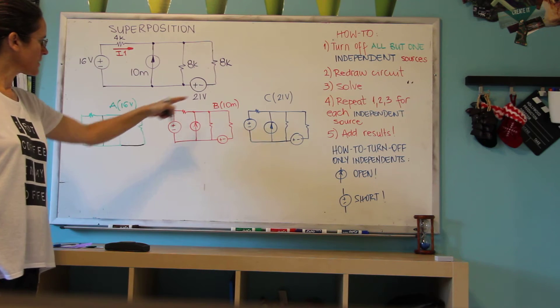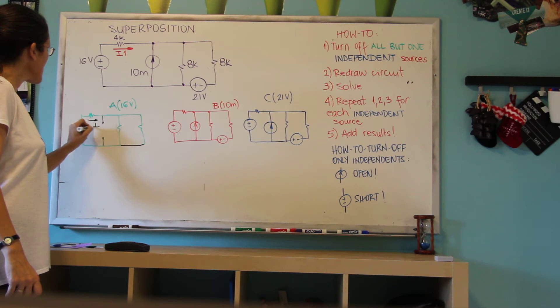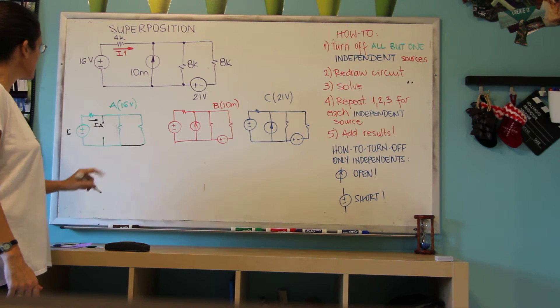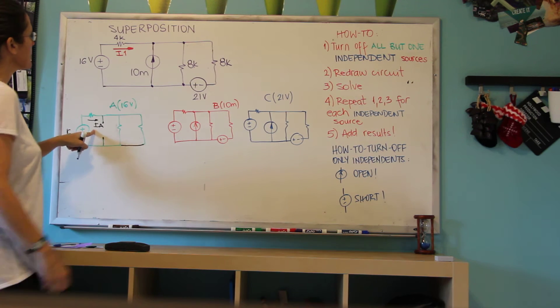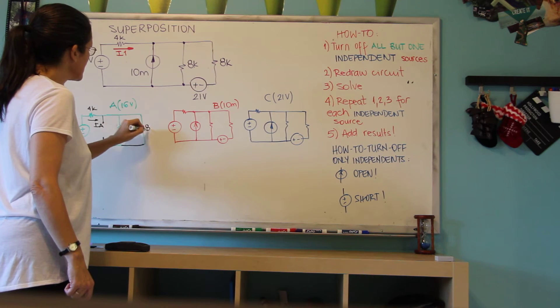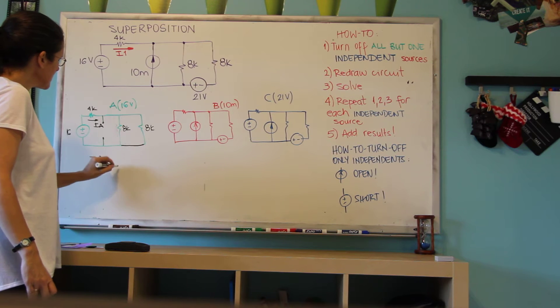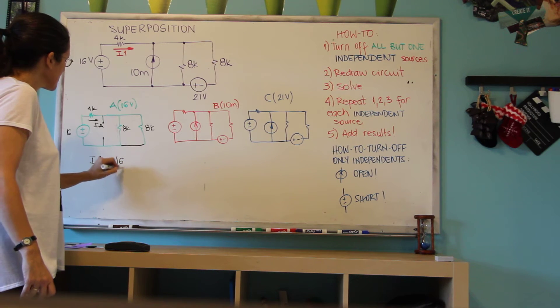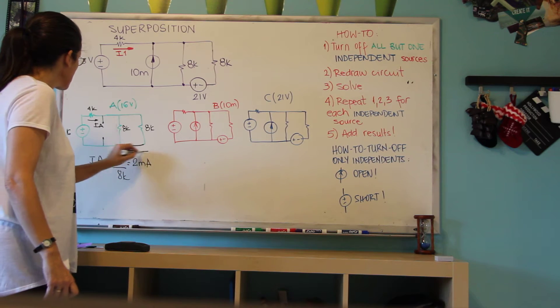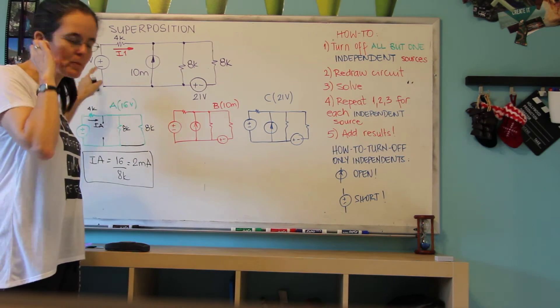I'm going to do the same thing later in these circuits. But now this current IA due to this power supply, 16 volts here, will be much simpler to solve. So this is 4K, this is 8K and 8K. So this is an 8K total resistance, which gives us 16 divided by 8K, it's 2 milliamps. This is the current on this resistor due only to the 16 volt power supply.